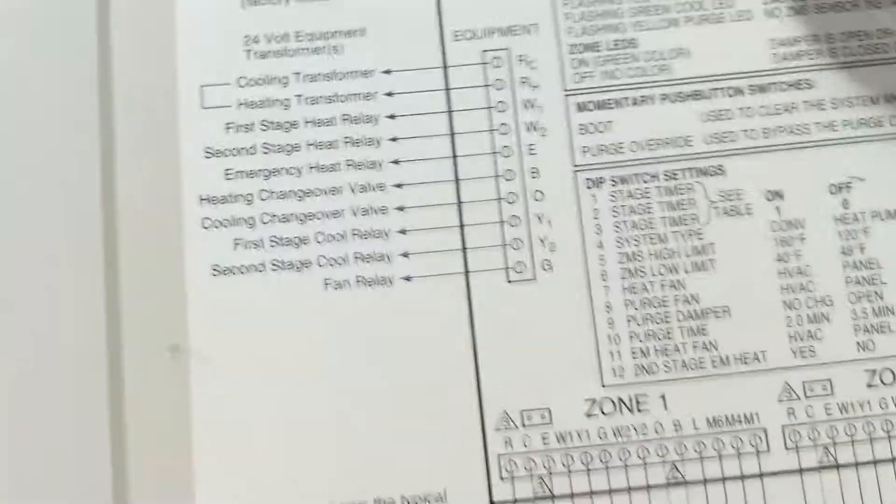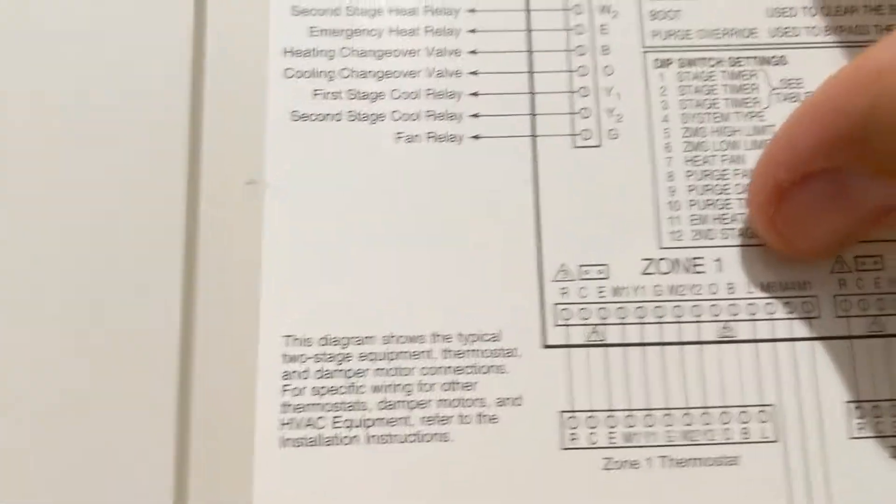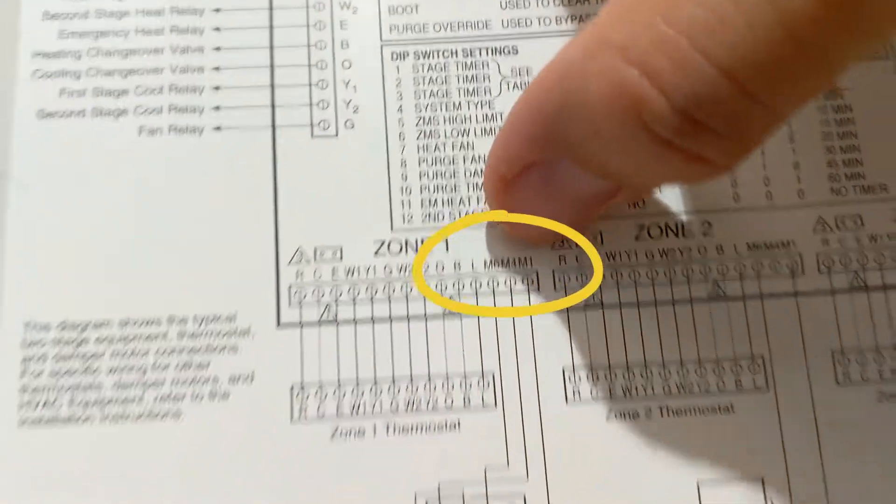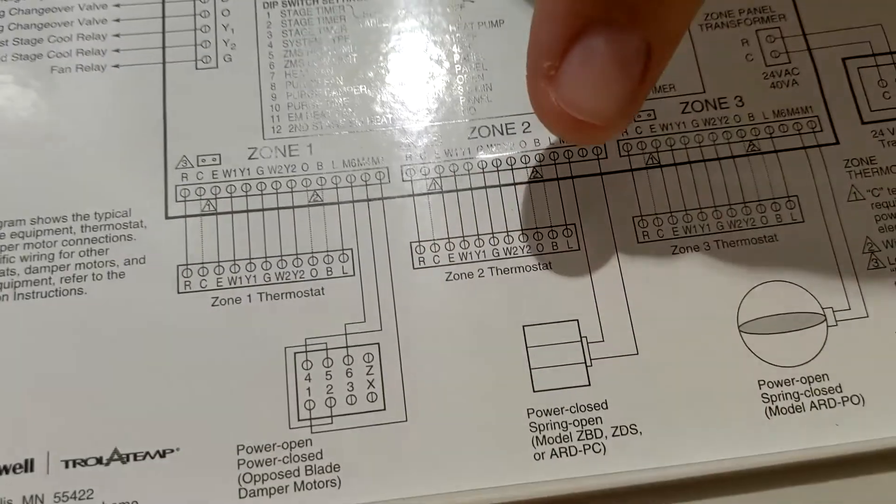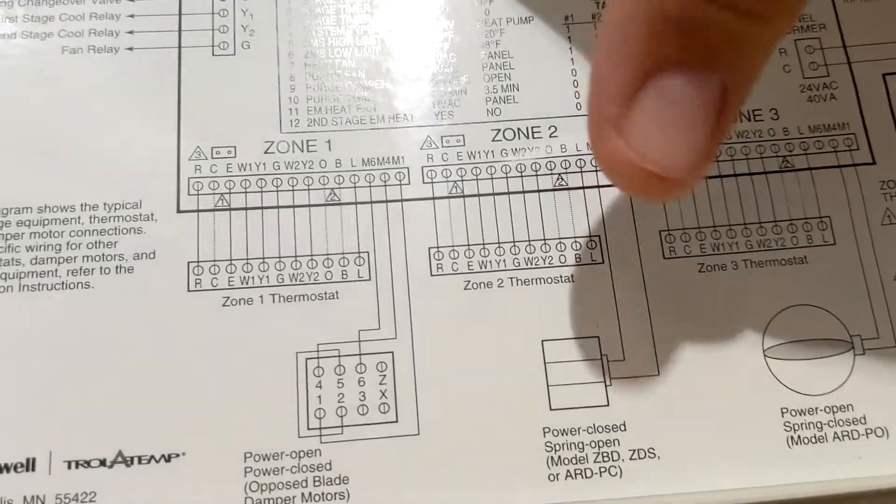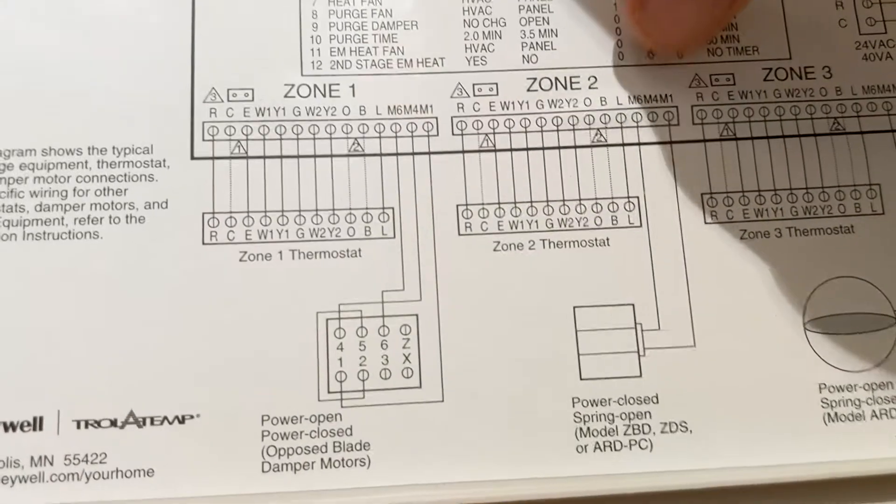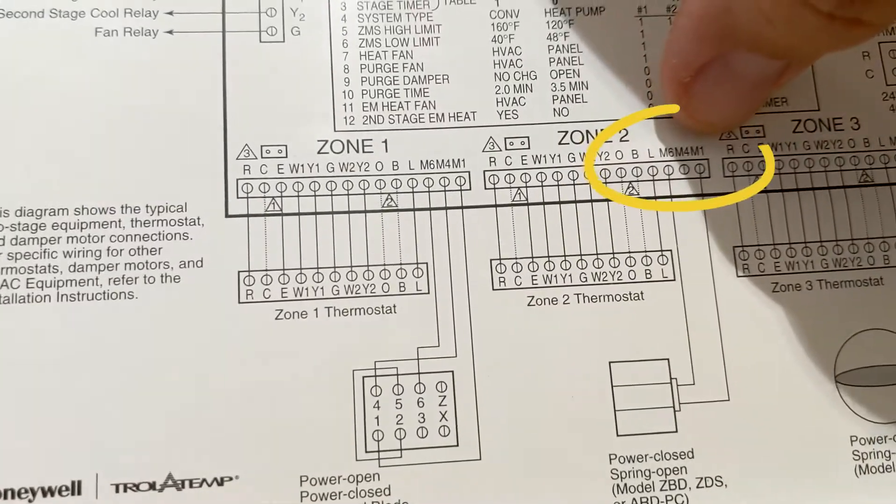M6 and M1, which is right here—M6 and M1 are the power for the damper. As soon as you take those out, the damper will open up, spring open. And then on zone two, M6 and M1, we...